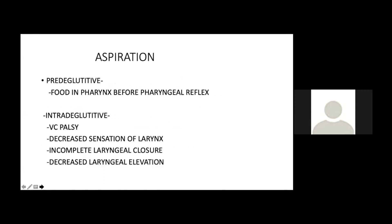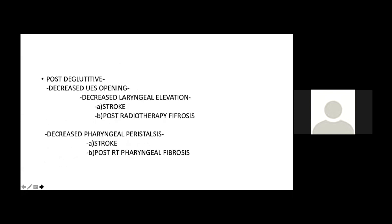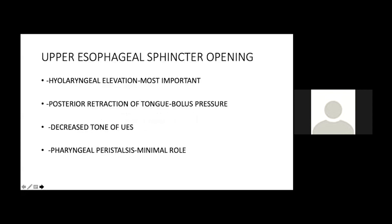The most important complication associated with dysphagia is aspiration. Aspiration may be pre-deglutative — food is in the pharynx before the pharyngeal reflex has started. Intra-deglutative aspiration is seen in vocal cord palsy, decreased laryngeal sensation, incomplete laryngeal closure, or decreased laryngeal elevation. Post-deglutative aspiration involves decreased upper esophageal sphincter opening, which may result from decreased laryngeal elevation, post-stroke, post-RT fibrosis, or decreased pharyngeal peristalsis.